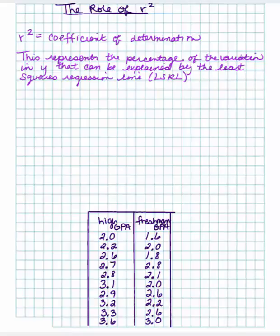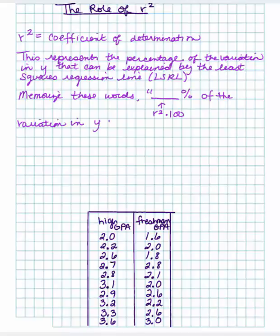You actually have to memorize specific words to use for the AP exam. So I'm going to put here, memorize these words. Blank percentage, and this is going to be your r squared times 100, because we want it to be in a percent. Of the variation in y can be explained by the least squares regression line. That's how you have to actually write it out.